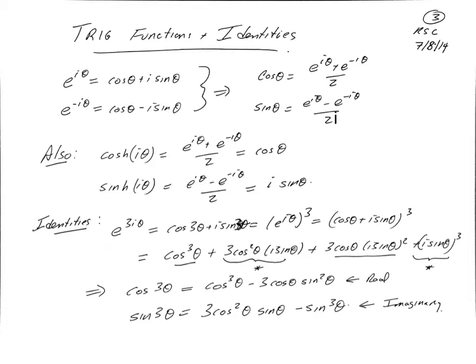We can also use Euler's formula to prove some convenient identities. For example, suppose we look at e to the 3i theta. That's just cosine of 3 theta plus i sine of 3 theta. Suppose I want to know what cosine of 3 theta is. I can say e to the 3i theta is just e to the i theta cubed, because when we take an exponential to the third power we just multiply the power by 3. That's cosine theta plus i sine theta cubed, which I can expand using the binomial formula: cosine cubed theta plus 3 cosine squared theta times i sine theta, plus 3 cosine theta times i sine theta squared, plus i sine theta cubed. Collecting real and imaginary parts, cosine of 3 theta is cosine cubed theta minus 3 cosine theta sine squared theta, and sine of 3 theta is 3 cosine squared theta sine theta minus sine cubed theta. This is a very convenient way of deriving identities involving multiple angles of trigonometric functions.